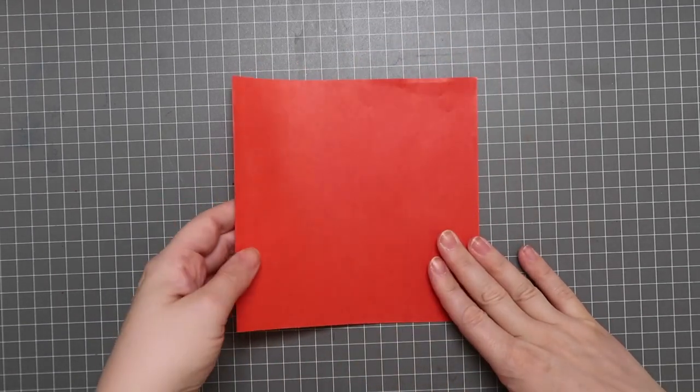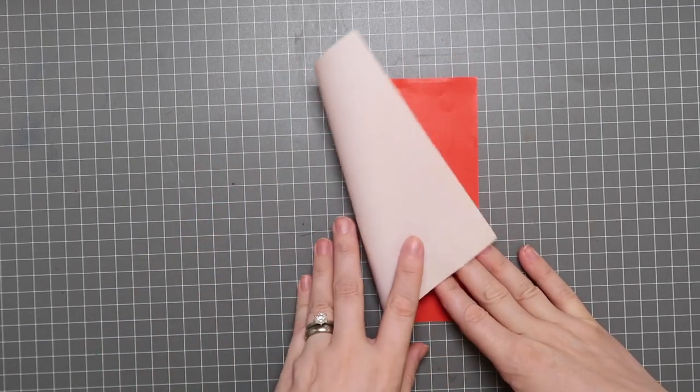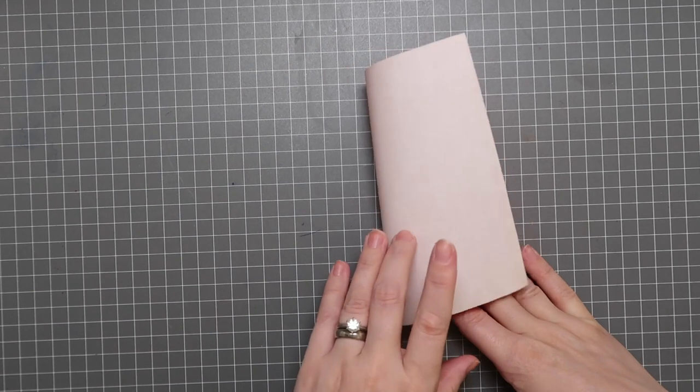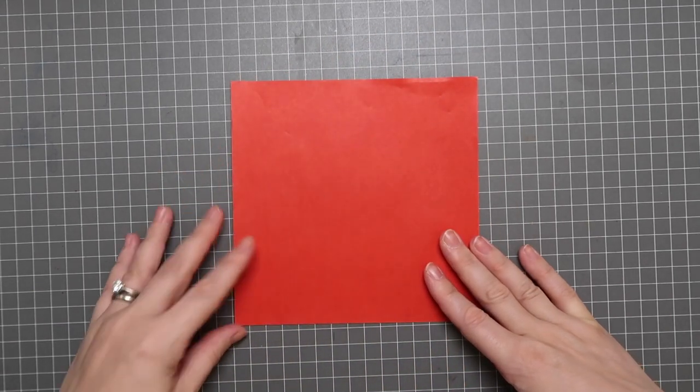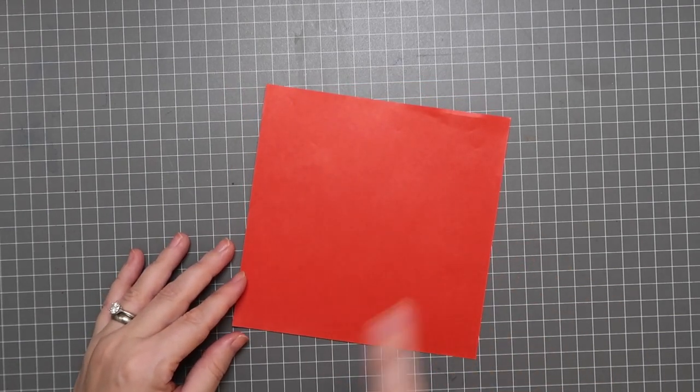I am using traditional origami paper for this because it is two-sided and the reverse side will be the top of the stocking and the side that's facing up will be the sock of the stocking.